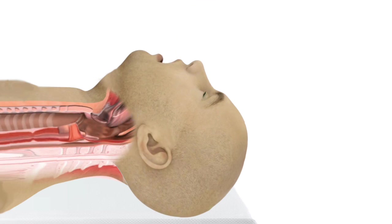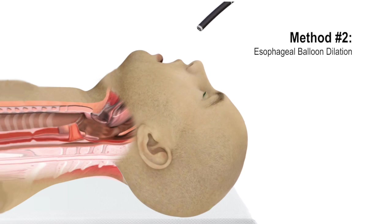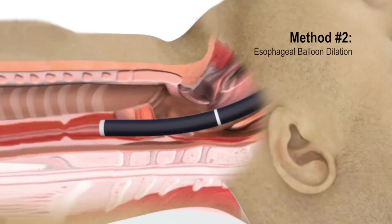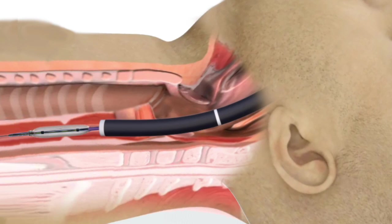Balloon dilation is accomplished by first inserting an endoscope to where the stricture is located. A deflated balloon catheter is then inserted, traversing the stricture. At that point, the balloon is inflated, thereby selectively stretching the area open while under endoscopic visualization. After a short period of time, the balloon is deflated and withdrawn.